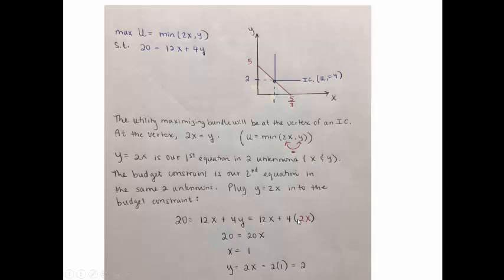So I'm going to take the budget constraint and where there's a y, plug in that y is 2x, and in doing that solve for x. Here x is 1. And since y has to be double x, y is 2. And that is how you solve for the utility maximizing bundle in the case of perfect complement goods.